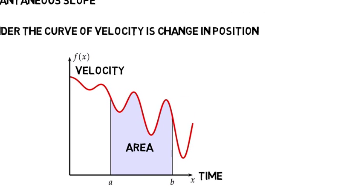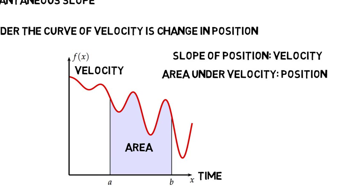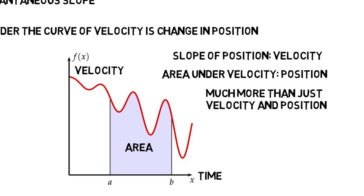This is kind of weird. The slope of position tells us velocity, and the area under velocity tells us change in position. So in calculus, area and slope are kind of opposites, which you'll see is actually mathematically true. Derivatives and integrals can be used for much, much more than just velocity and position, but those are the most obvious that we can all understand.